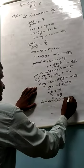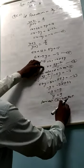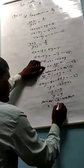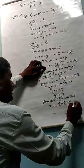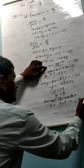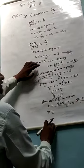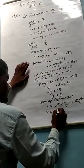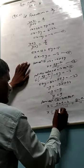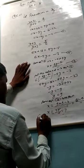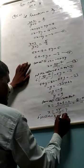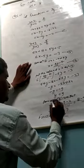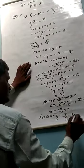y ki value equation 1 me put karenge. x equals 9y minus 4 upon 11. y ki value 9, so x equals 81 minus 4 upon 11, equals 77 upon 11, equals 7. Fraction kya ho jayegi? x upon y, x ki value 7, y ki value 9. 7 upon 9. This is your answer.